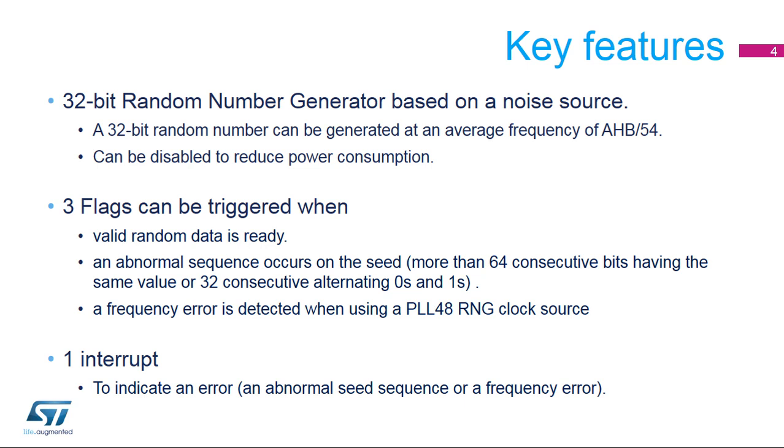When a PLL48 RNG clock source is used, a clock error current status flag is set if the PLL48 clock frequency is less than HCLK divided by 32.